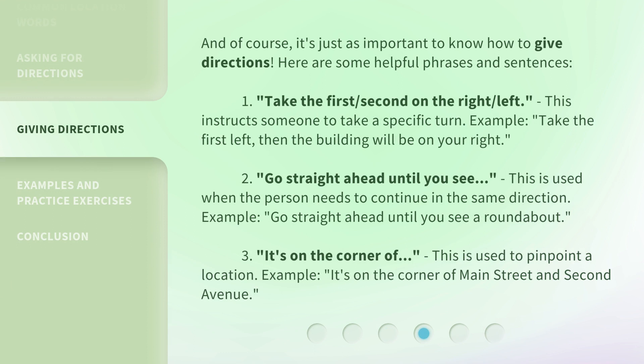And of course, it's just as important to know how to give directions. Here are some helpful phrases and sentences. 1. "Take the first/second on the right/left." — This instructs someone to take a specific turn. Example: "Take the first left, then the building will be on your right." 2. "Go straight ahead until you see..." — This is used when the person needs to continue in the same direction. Example: "Go straight ahead until you see a roundabout." 3. "It's on the corner of..." — This is used to pinpoint a location. Example: "It's on the corner of Main Street and 2nd Avenue."